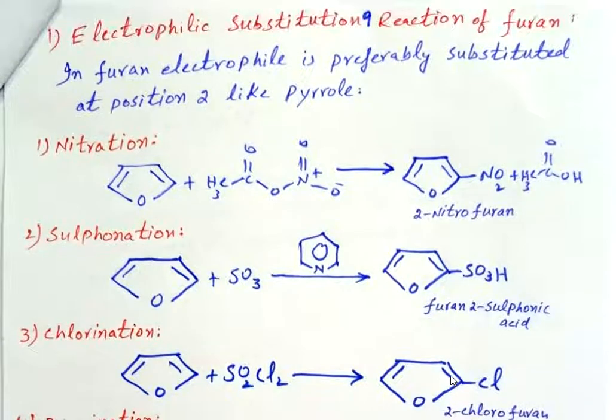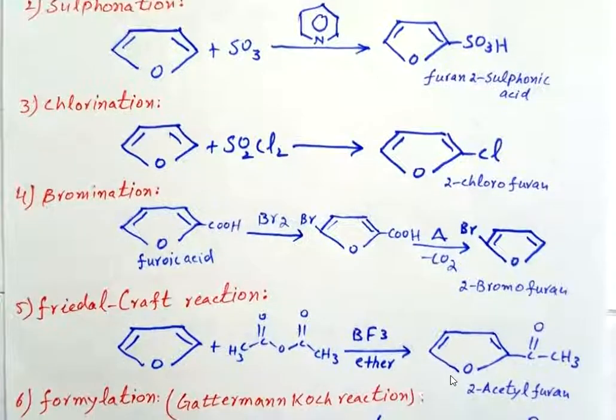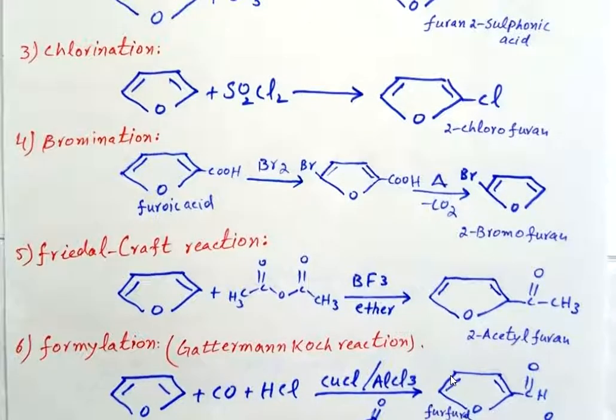The next reaction is bromination. In the bromination reaction, instead of direct treatment of furan with bromine, furoic acid is treated with bromine. In furoic acid, there is a carboxylic group at position 2, so when bromine is treated with furoic acid, bromine is substituted at position 2.